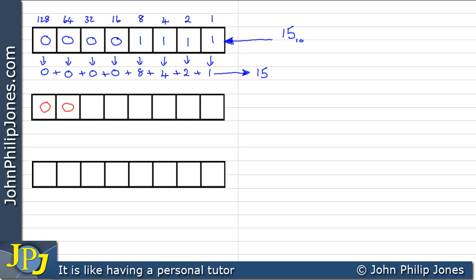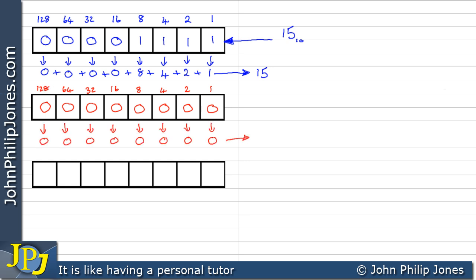Let's consider the same register, but this time let's fill it with 0s. Every position has a position value as you can see here, but of course every bit is worth 0 in this particular case. So all of that is 0 — when everything is 0, it obviously represents 0.